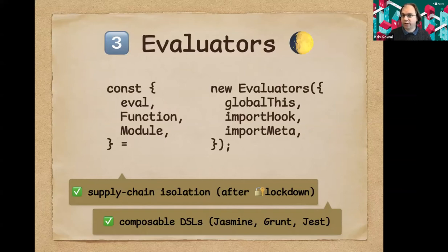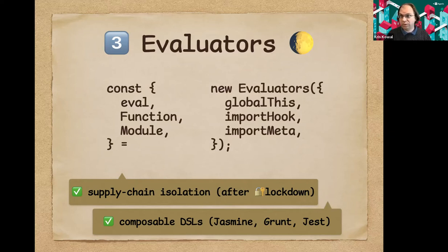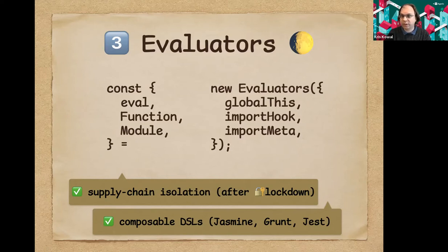The evaluator layer provides a constructor where you supply a global object, an import hook, and an import.meta, and from that you get a new eval, a new Function constructor, and a new Module constructor. The resulting eval and module would evaluate code within an emulated global environment using that global object, import hook, and import.meta. Dynamic import is also supported in a script context, so if you use dynamic import within a function body, the import hook and import.meta provided to the evaluator constructor would be used.